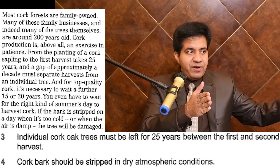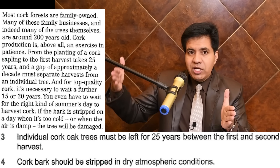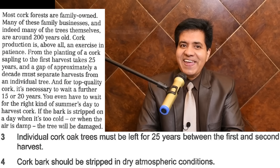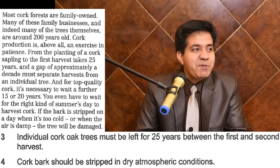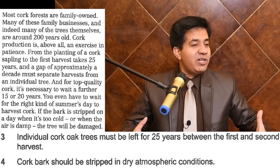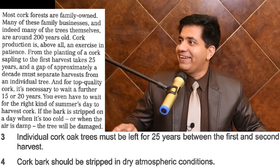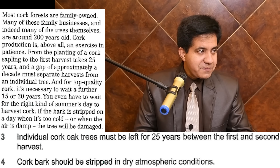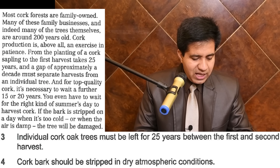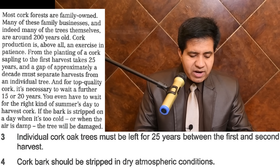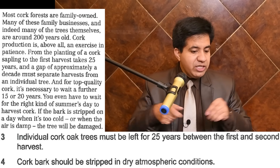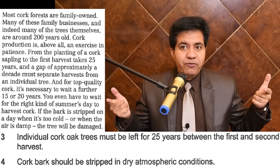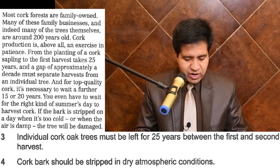If you do it blindly — 25 years in the passage, 25 years in the question — you might say true. But the context is completely different. The passage refers to planting to first harvest; the question refers to between two harvests. This is a common trap. Always read carefully and match the exact meaning, not just the number.